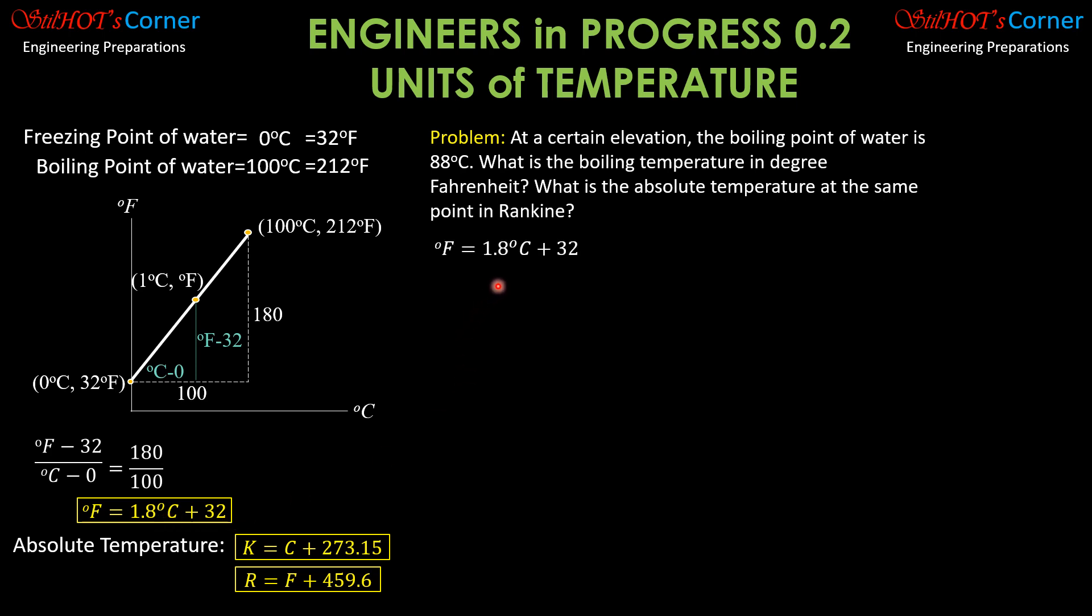So degree Fahrenheit equals 1.8 times C plus 32. Substitute: degree Fahrenheit equals 1.8 times 88 plus 32. So since in engineering classes you're allowed to use the calculator because we should adapt the technology.